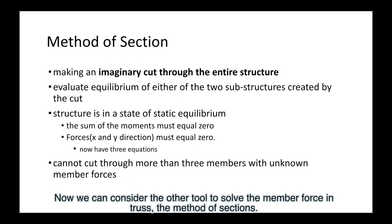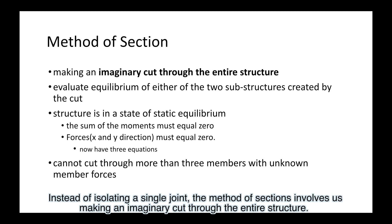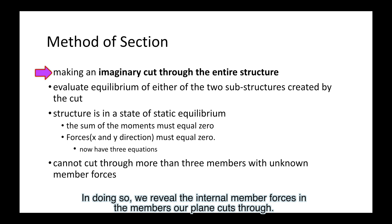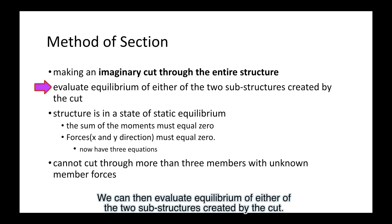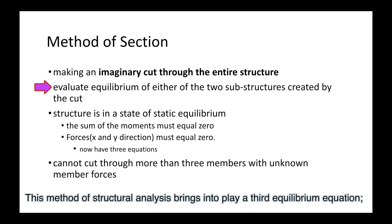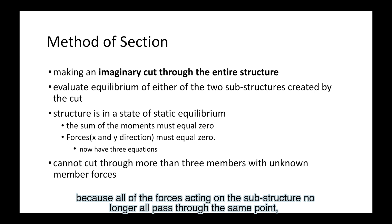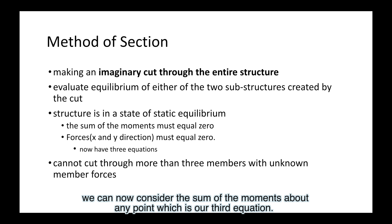Now we can consider the other tool to solve the member force in truss: the method of sections. Instead of isolating a single joint, the method of sections involves us making an imaginary cut through the entire structure. In doing so, we reveal the internal member forces in the members the plane cuts through. We can then evaluate equilibrium of either of the two substructures created by the cut. This method of structural analysis brings into play a third equilibrium equation. Because all of the forces acting on the substructure no longer all pass through the same point, we can now consider the sum of the moments about any point, which is our third equation.